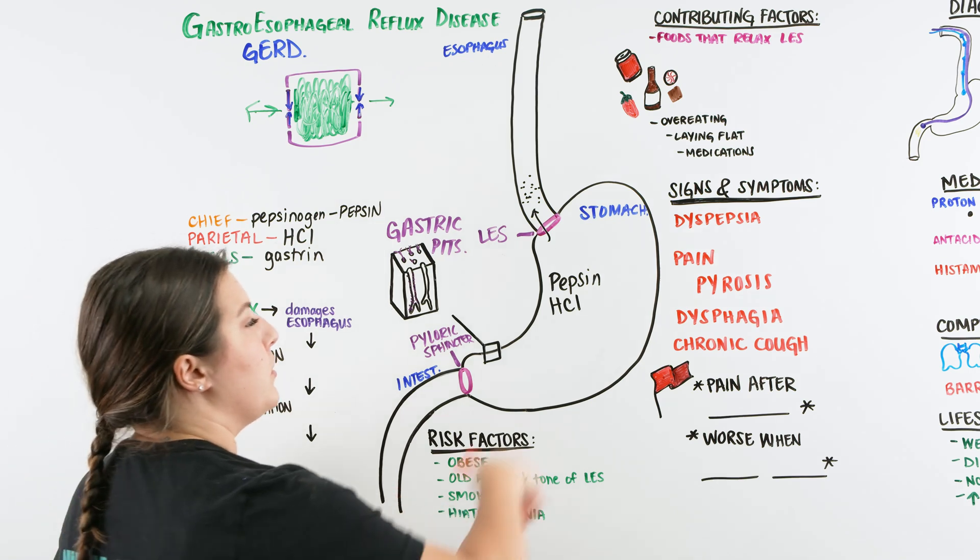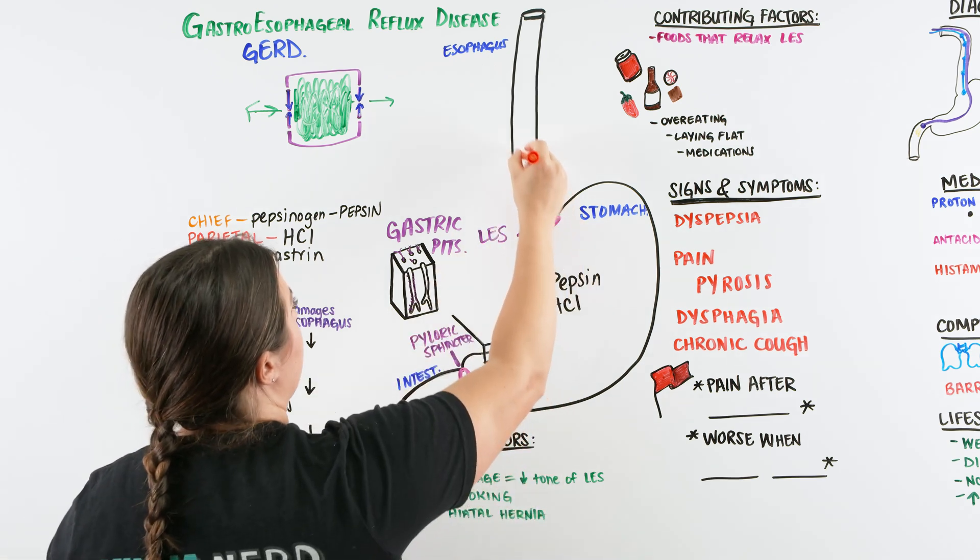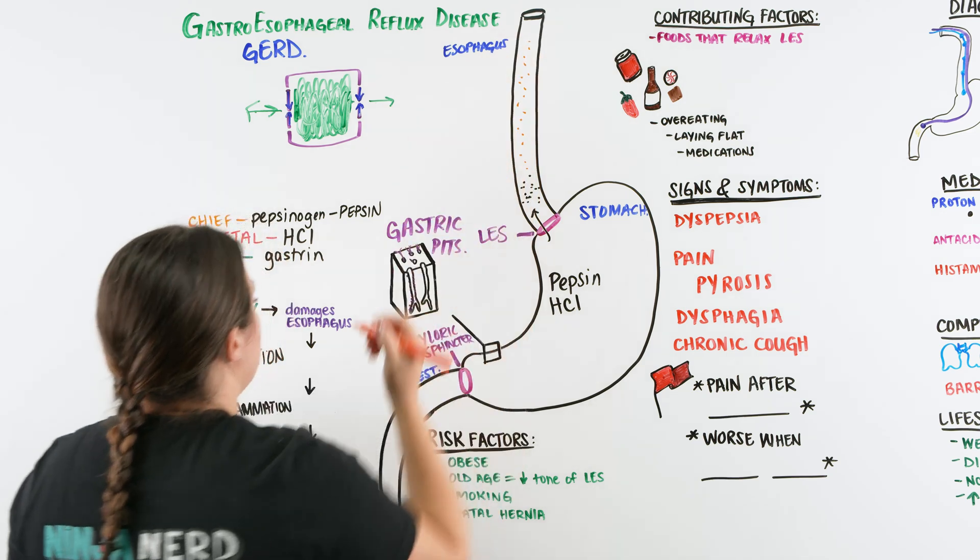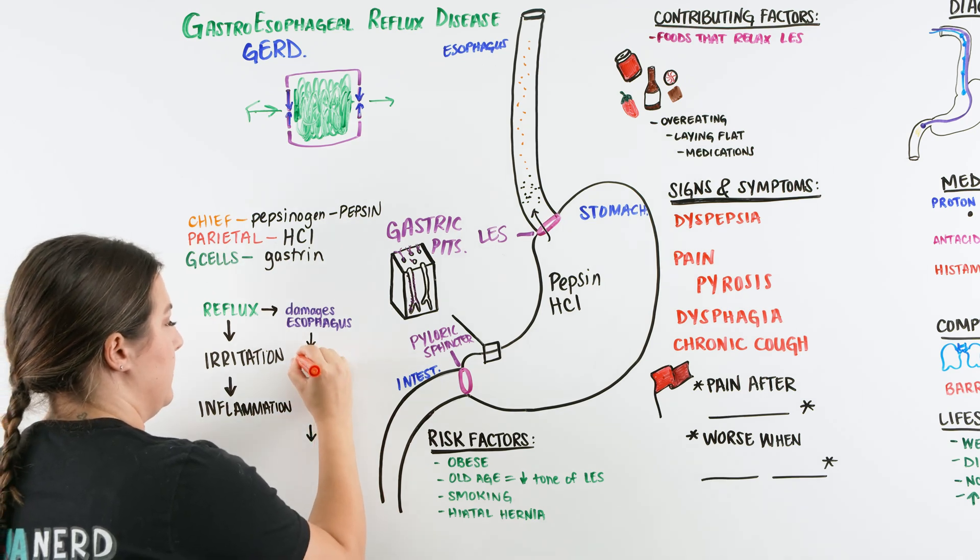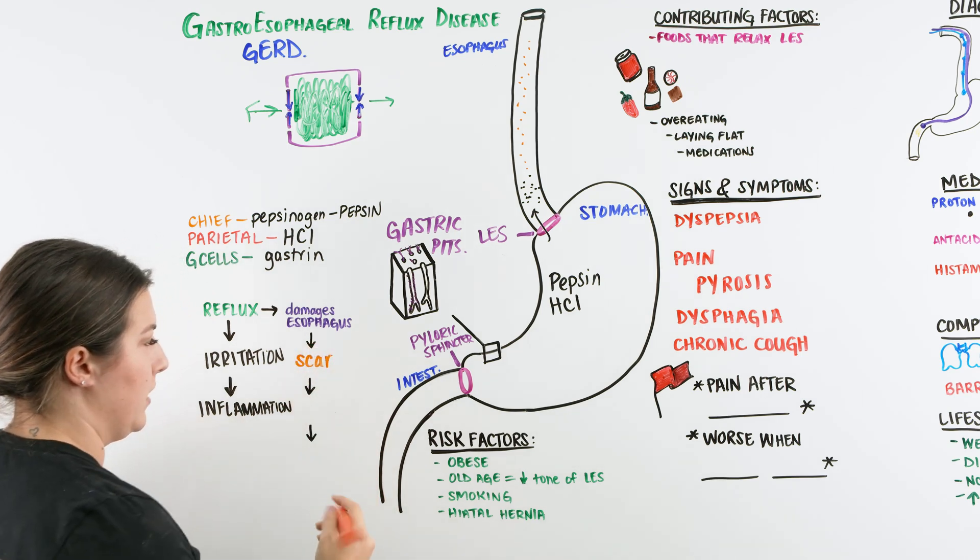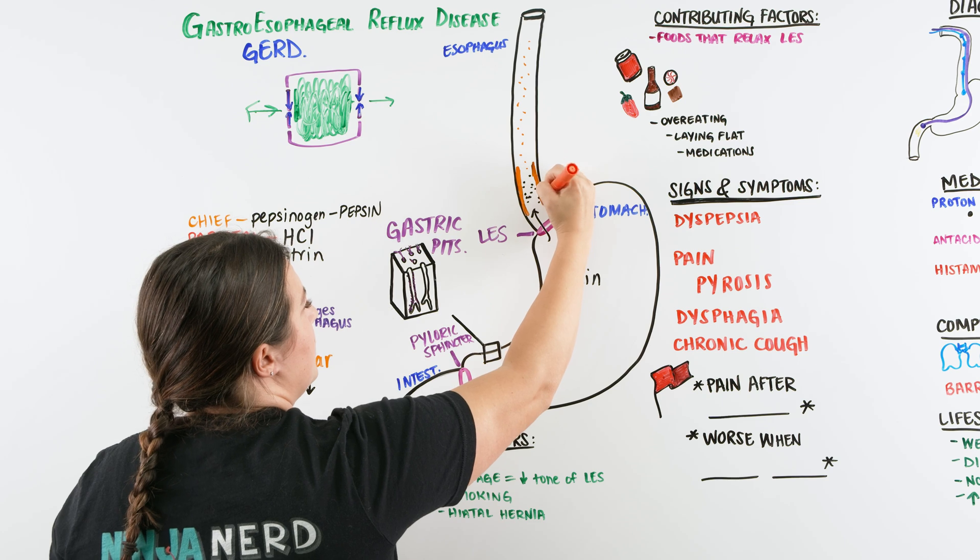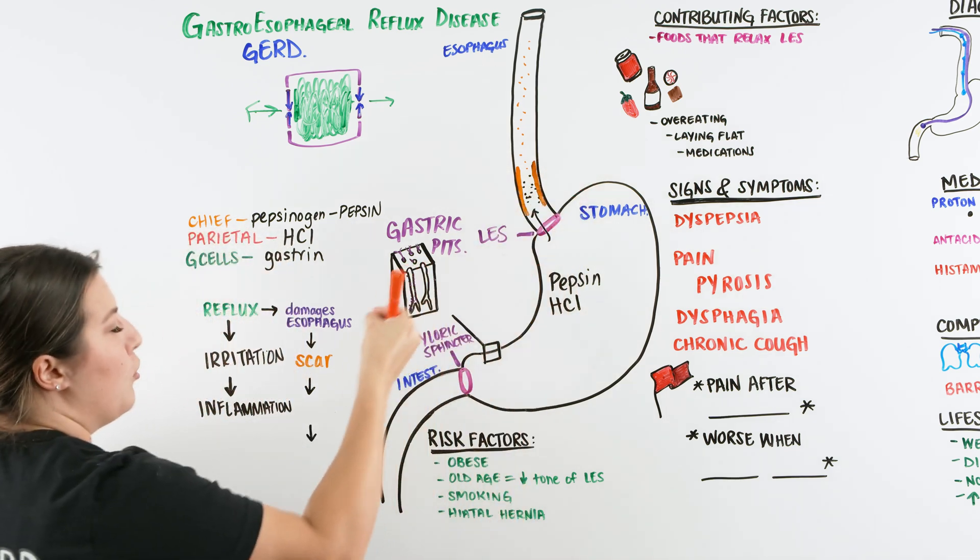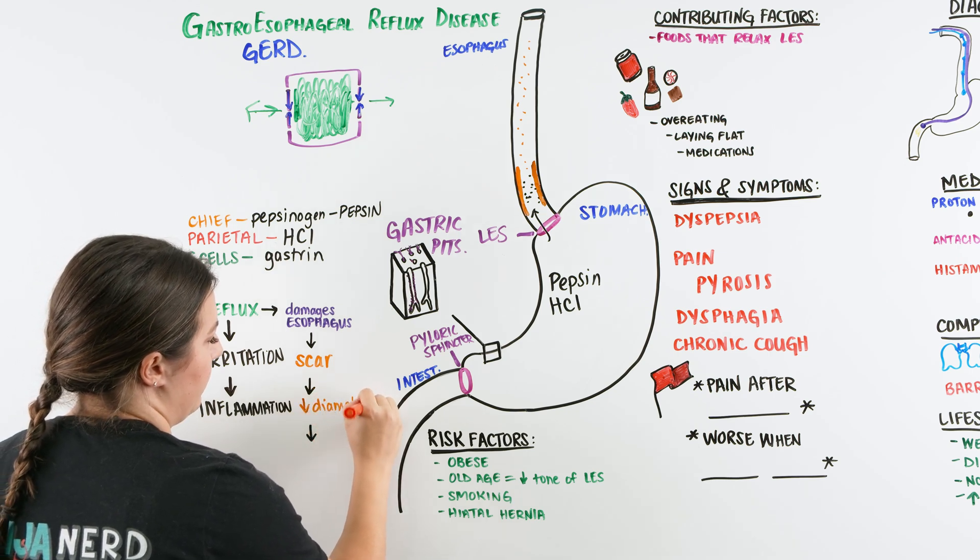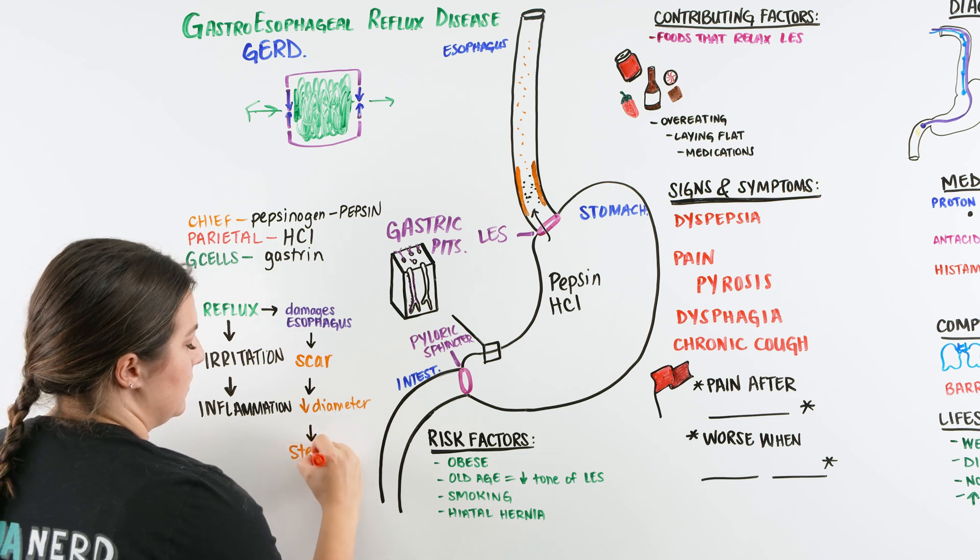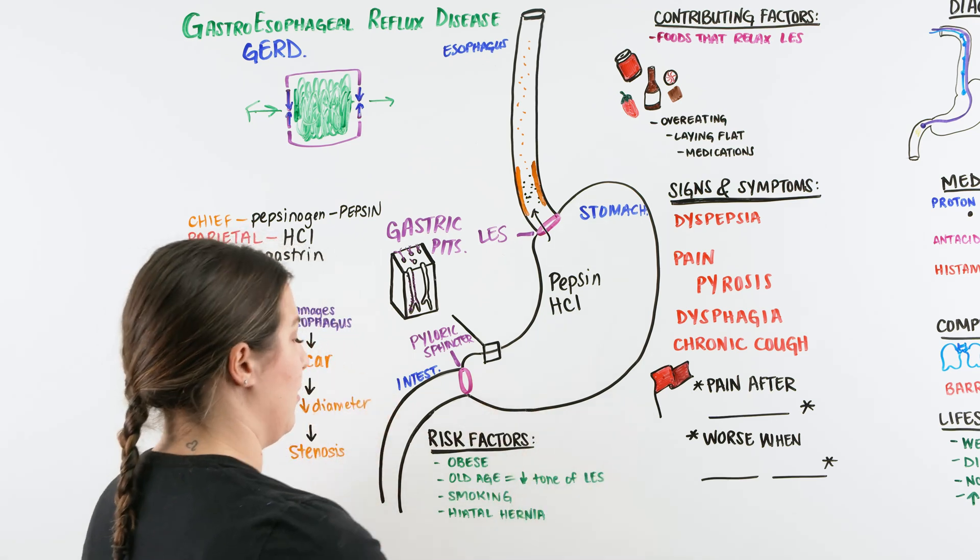But over time, if this is occurring chronically, this patient has really intense GERD that's occurring, lots of reflux, it might be going all the way up the esophagus, it's going to damage that esophagus. And when we have that damaging, we have something called scarring. Over time, there's a scarring that is occurring within the esophagus. But scarring, as it occurs in the esophagus, can start to close the lumen or make the opening look smaller. So a decrease in the diameter of the esophagus. And because of that, we can get stenosis in our esophagus.